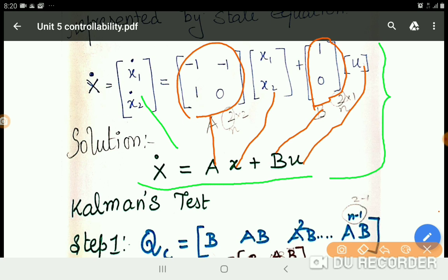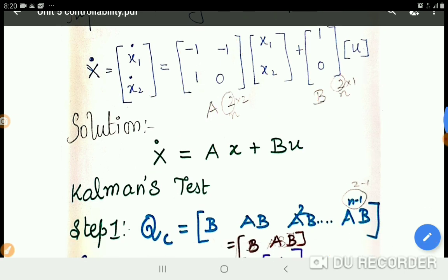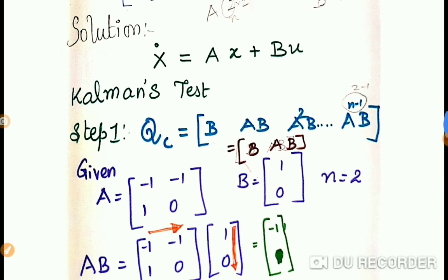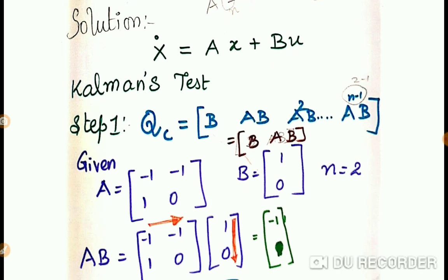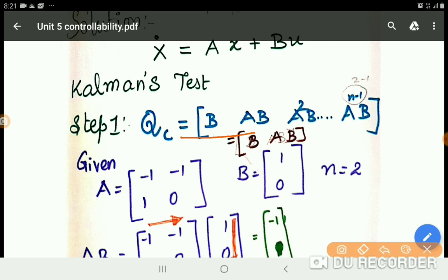Then we need to check with Kalman's test. So how about the Kalman's test? In Kalman's test, we know step number one: we have a Qc equation in standard form. Qc equation is [B AB A²B ... Aⁿ⁻¹B], where n is the order.